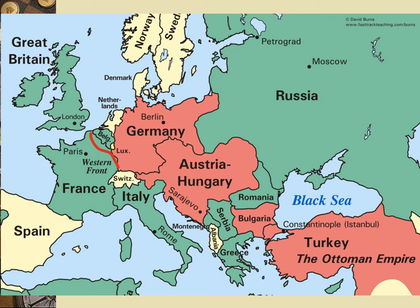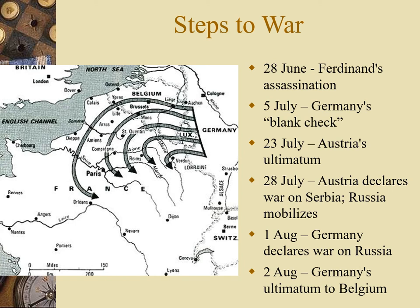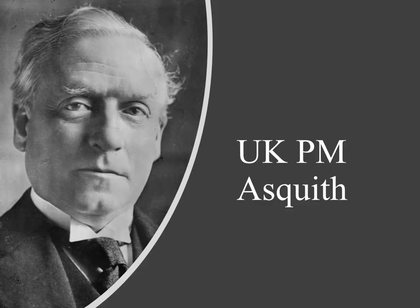England, going back to 1815, was all about maintaining the balance of power — not trying to take over, but not wanting any one power to get too powerful. Then Germany gave Belgium an ultimatum: surrender or face war. That's when the United Kingdom got involved. UK Prime Minister Herbert Asquith said, 'No, Belgium is our ally. They're neutral. If you do anything with Belgium, that will be war with us.'